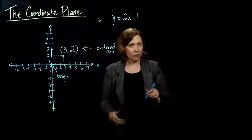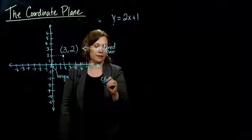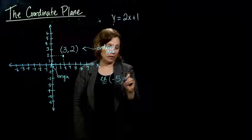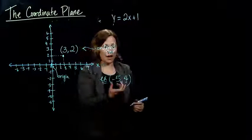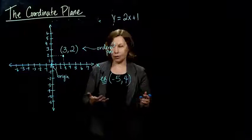Alright, so if I gave you an ordered pair, so say something like negative five, I don't know, four, could we find that ordered pair on our coordinate plane? Well, sure.